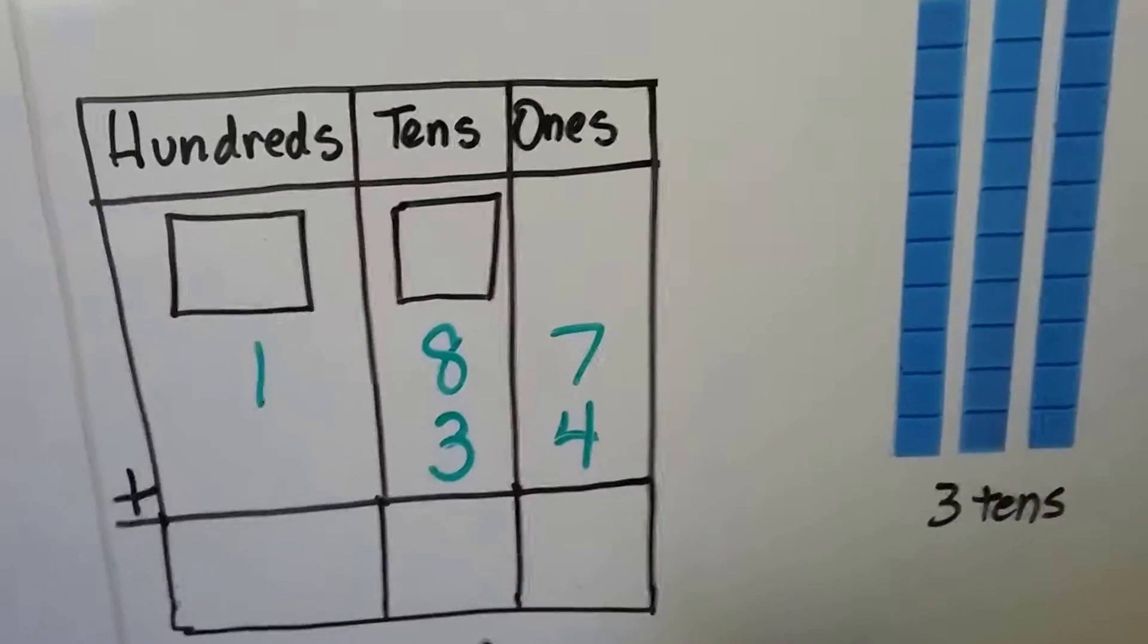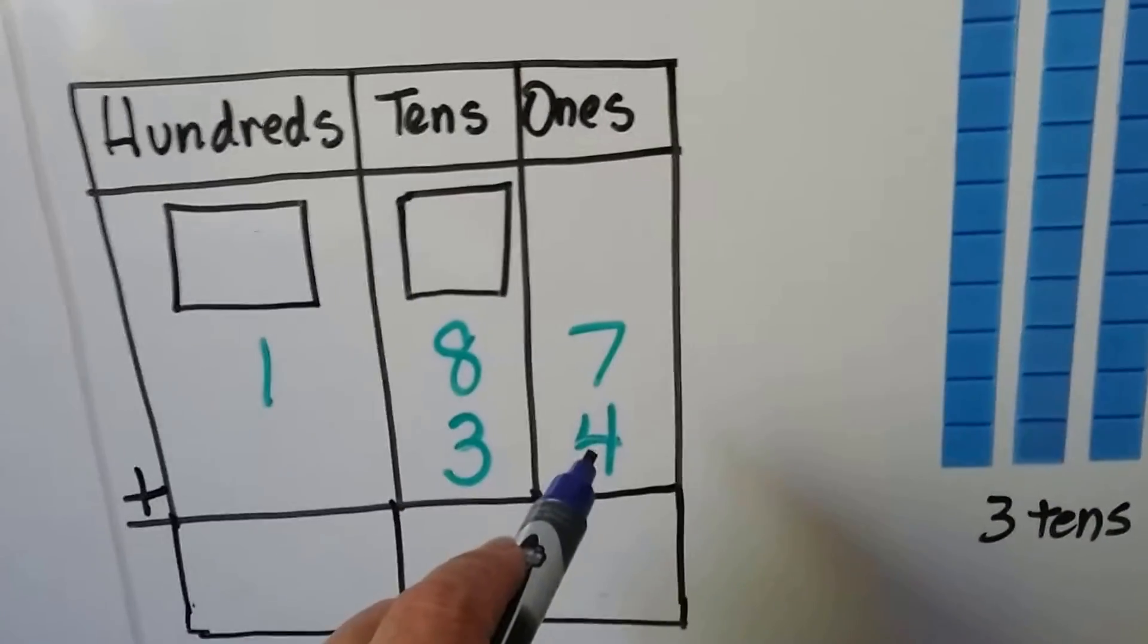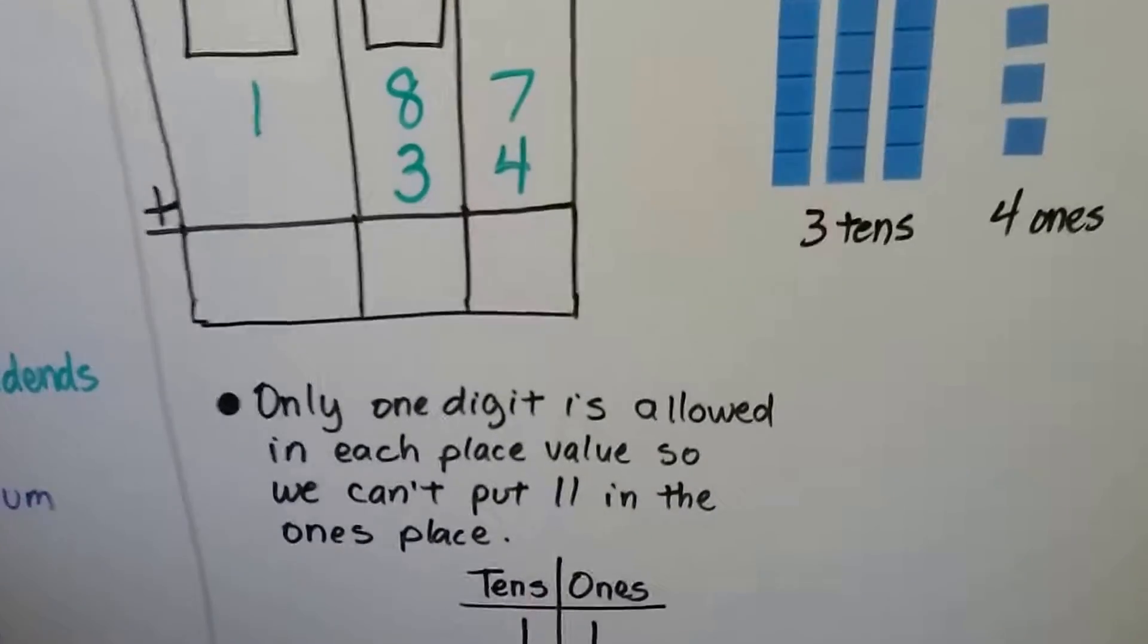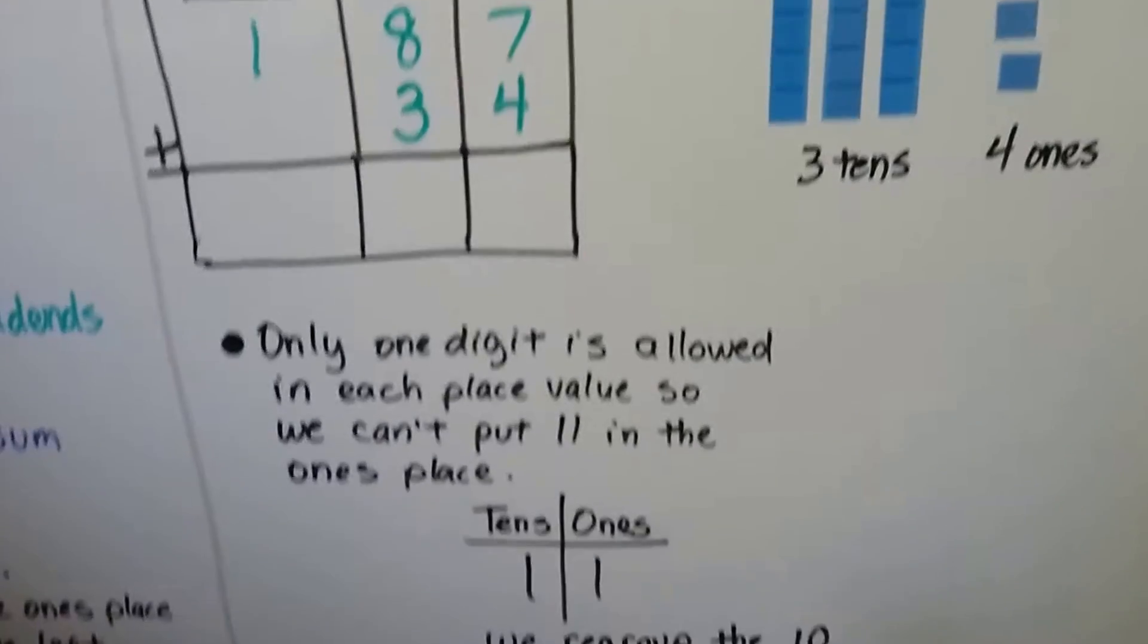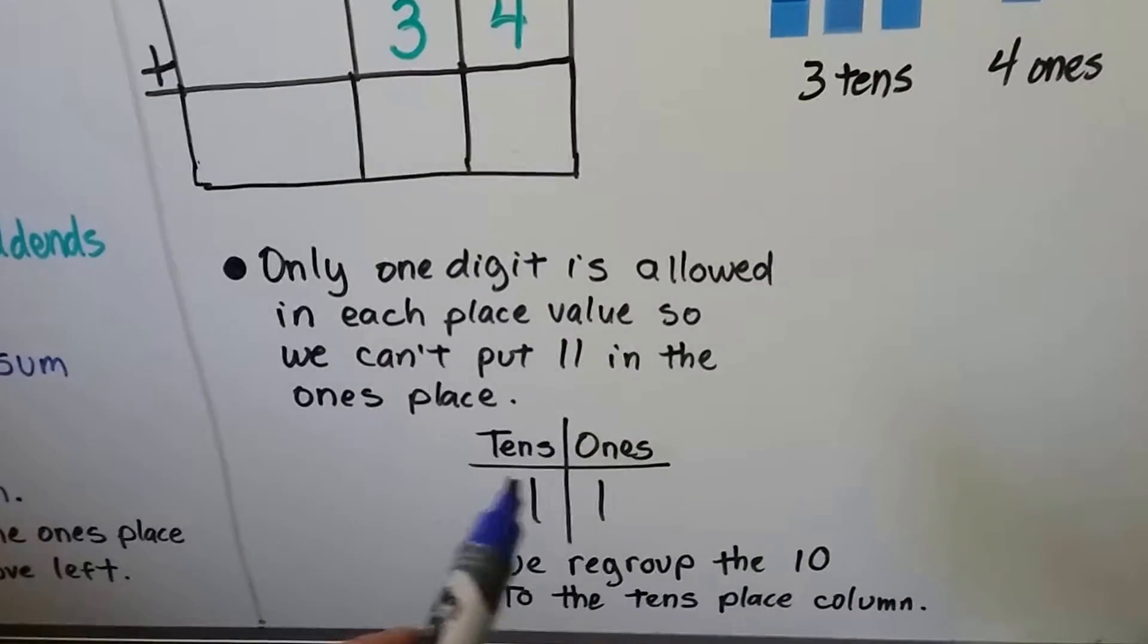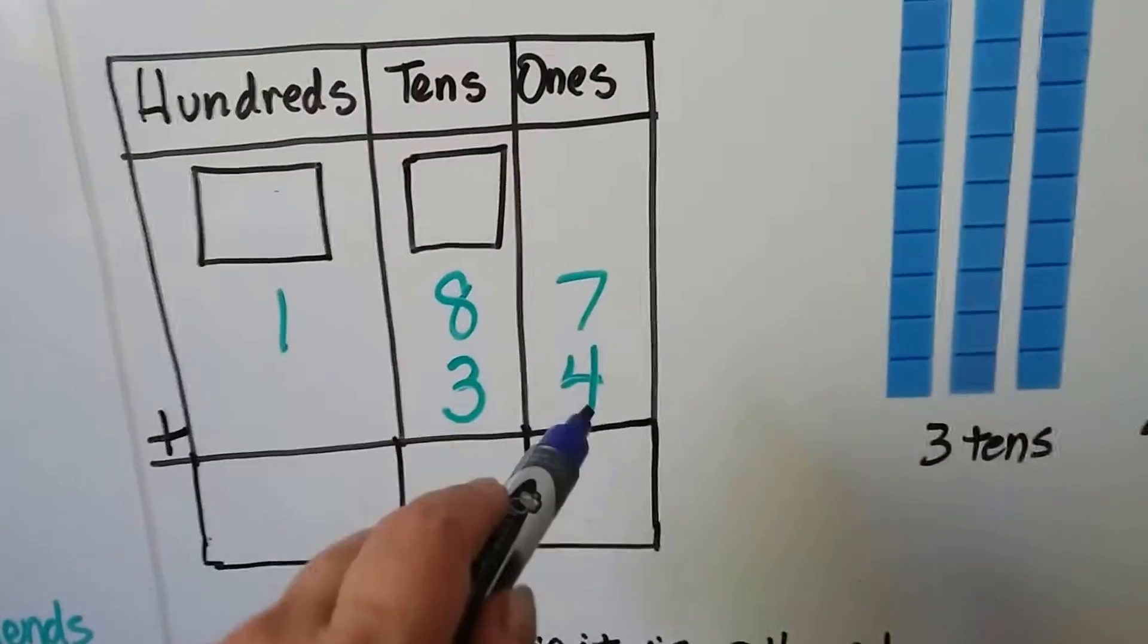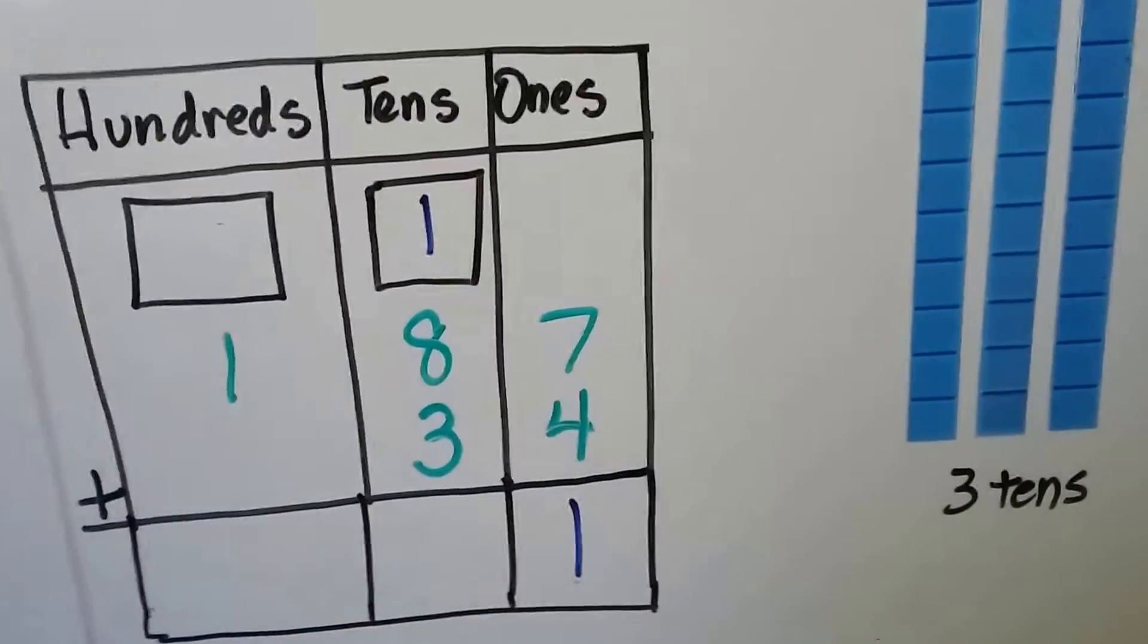So what we do is we add the ones place, 7 plus 4 is 11, but there's only one digit allowed in each place value. We can't put an 11 into this box. It can only be one digit. An 11 is 1 ten and 1 one. So we regroup this 10 to the tens place. We have 7 plus 4 is 11. We give the 10 to the tens place and we put the 1 in the ones place.